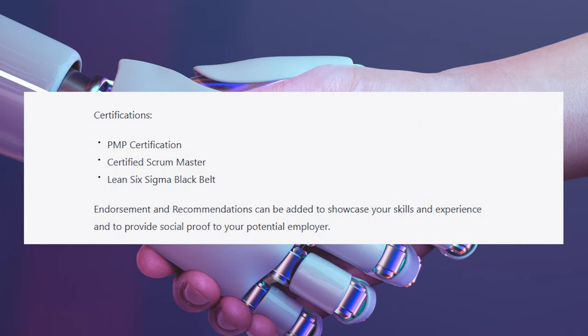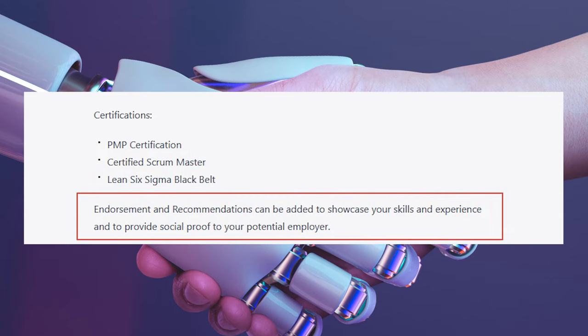An additional tip to further optimize your LinkedIn profile: as ChatGPT mentioned, endorsements and recommendations can be added to showcase your skills and experience and to provide social proof for potential employers. That is very essential. In the recommendations section, you can send a request to a colleague, your manager, or someone you've worked with and ask them to write a recommendation for you. It actually helps people see that someone is genuinely endorsing you.